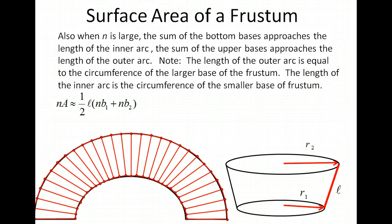We can find the lengths of the inner and outer arcs by looking at the frustum itself. The circumference of the bottom base is equal to the length of the inner arc, and the circumference of the top base is equal to the length of the outer arc. We know that the bases are circles, so we're using the circumference formula 2πr to get the length of the inner arc and the outer arc.